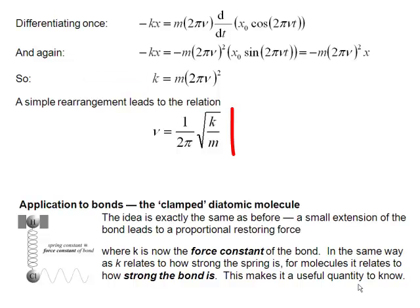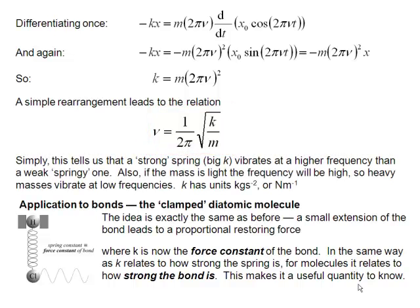So if we simply rearrange that equation, we end up with this important equation that the frequency is 1 over 2π square root of k, that's the force constant, the spring constant, divided by m. So we can see that the frequency scales with k. So if we have a strong spring, that means that k is big, then the frequency is going to be high.